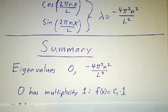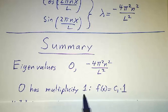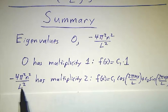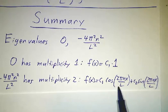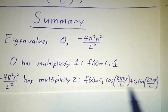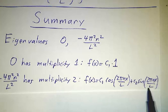The zero eigenvalue has multiplicity 1, and the only eigenfunctions are the constants, that is a constant times 1. Minus 4π²/L² has multiplicity 2, and we get two functions. You can have cos(2πnx/L) or you can have sin(2πnx/L).